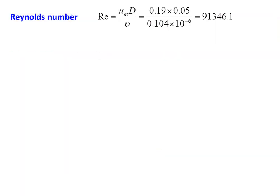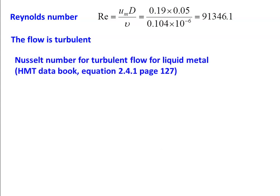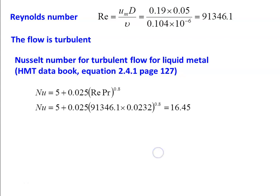Reynolds number: Re = Um·D/ν = 0.19 × 0.05 / (0.104 × 10⁻⁶) = 91,346.1. The flow is turbulent. For turbulent flow with a liquid metal, from data book equation 2.4.1, page 127: Nu = 5 + 0.025 × (Re × Pr)^0.8 = 5 + 0.025 × (91346.1 × 0.0232)^0.8 = 16.45.